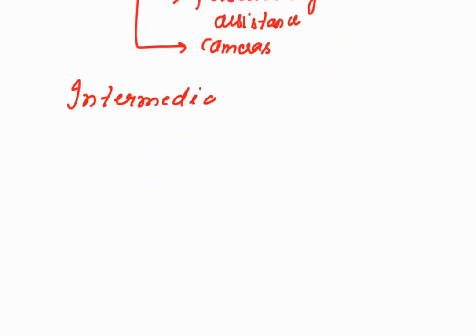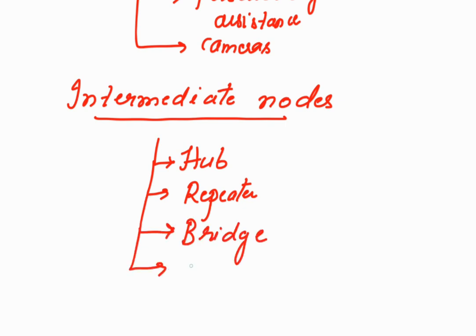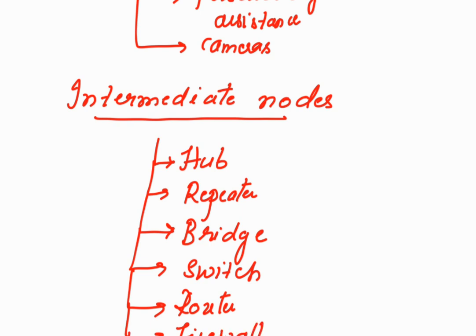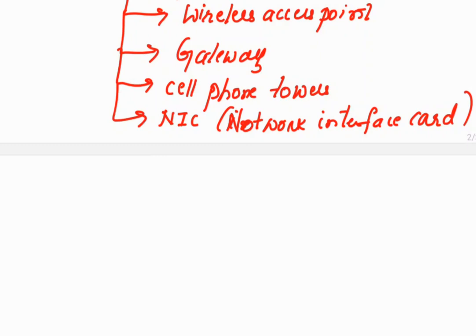The different intermediate nodes in a computer network include: hub, repeater, bridge, switch, router, firewall, wireless access point, gateway, cell phone towers, and the NIC — network interface card. The nodes which forward data from the sender towards the receiver side are called intermediate nodes.